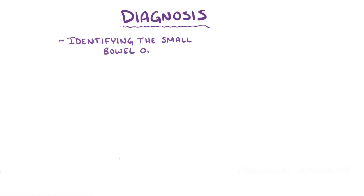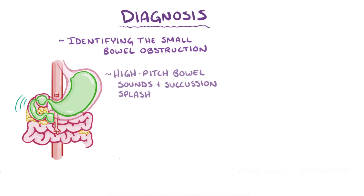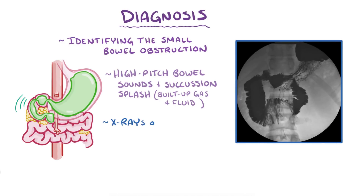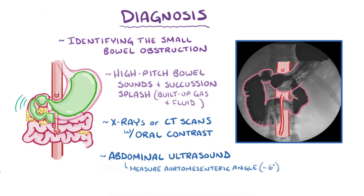Diagnosis starts with identifying the small bowel obstruction, which might be due to a lot of things including superior mesenteric artery syndrome. Typically on exam, a small bowel obstruction can cause high-pitched bowel sounds, as well as a succussion splash, which is the sloshing sound of built-up gas and fluid in the distended digestive tract upstream of the obstruction. If superior mesenteric artery syndrome is suspected, imaging studies like abdominal x-rays or CT scans with oral contrast can be helpful, as well as an abdominal ultrasound to measure the aorto-mesenteric angle, which can get as narrow as 6 degrees.